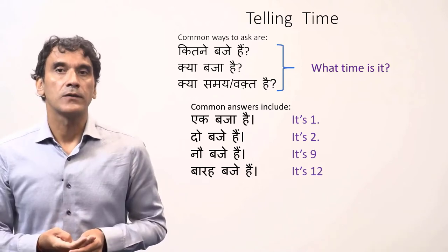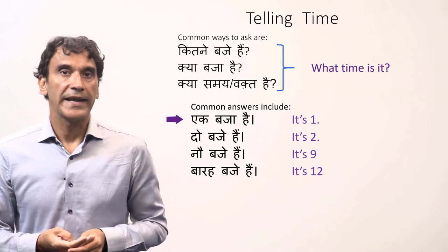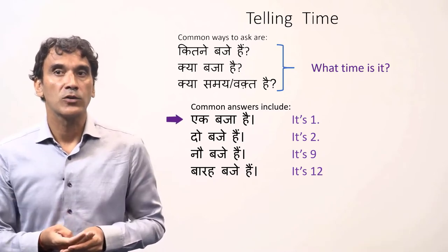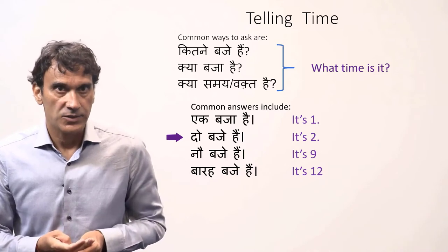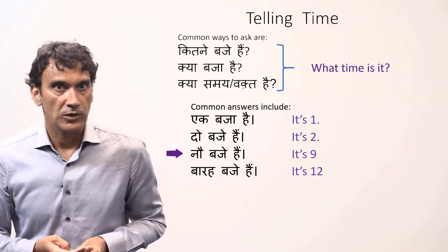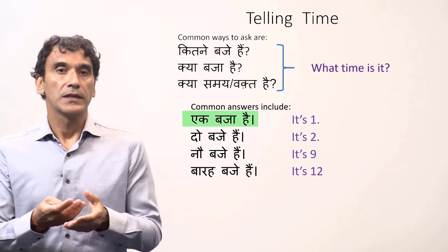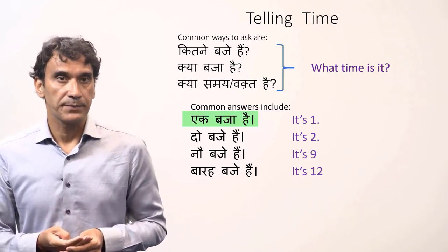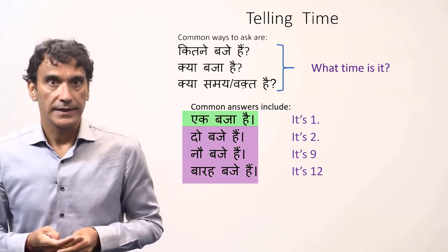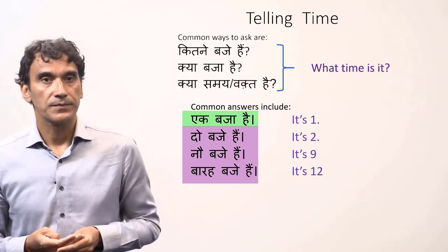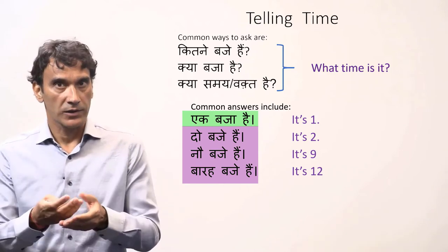For the full hour, the word Baja is used for singular and Baje for plural. Ek Baja hai — it is one o'clock — is singular. The rest are plural: Do Baje hain (it is two), No Baje hain (it's nine o'clock), Bara Baje hain (it is twelve). The verb hai is singular for Ek, and hain (with nasalization) is plural for all other numbers.